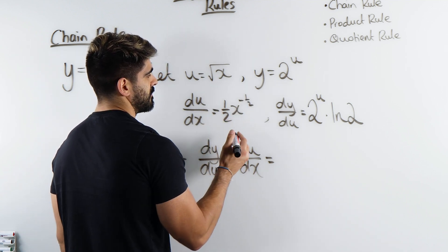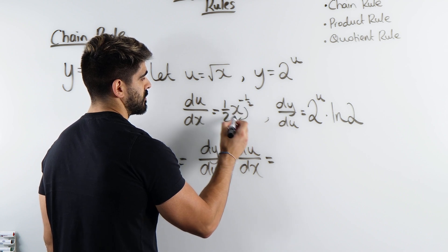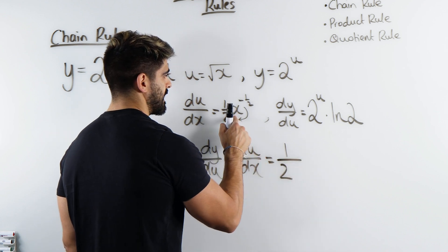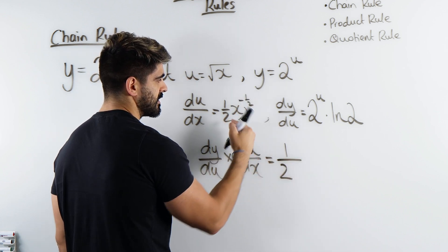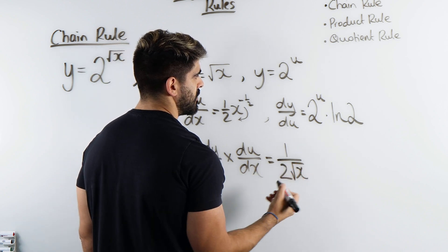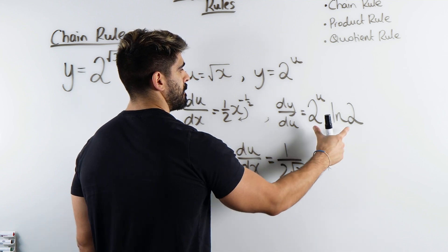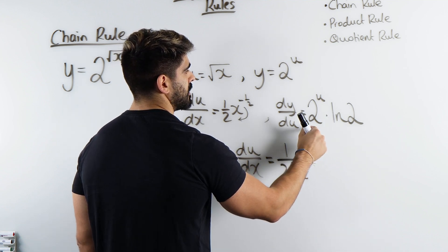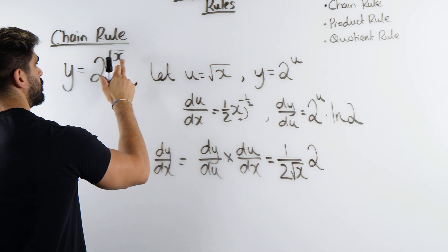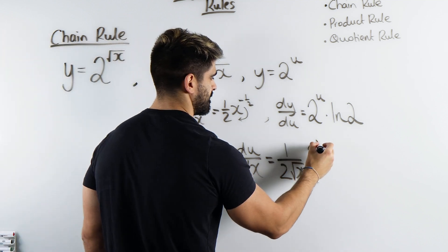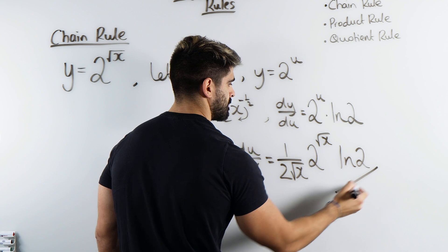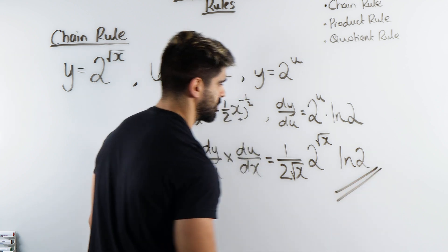So we're left with this multiplied by this. I get one half times x to the minus half, which I write as 1 over 2 root x. Then I multiply that by 2 to the power of u. But remember u was root x, so 2 to the power of u becomes 2 to the power of root x. And that is our answer — that's the chain rule process.